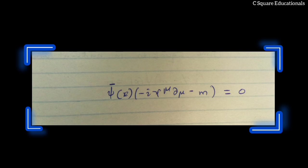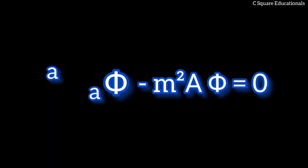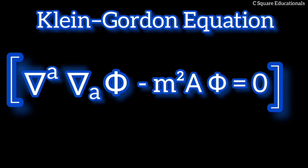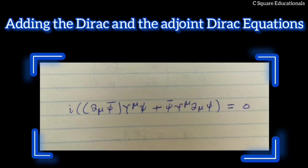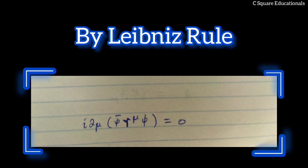Applying the i partial slash plus m to the Dirac equation, each component of the Dirac spinor field satisfies the Klein-Gordon equation. A conserved current of the theory is J mu equivalent to psi bar gamma mu psi. Proving conservation from the Dirac equation, we add the Dirac and adjoint Dirac equations, and by the Leibniz rule, we have i partial mu of psi bar gamma mu psi equals zero.